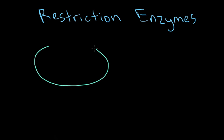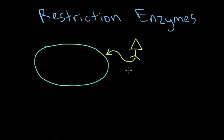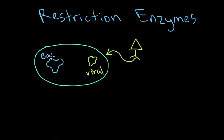Let's imagine that we've got a bacteria floating around doing its thing, and out of nowhere comes a virus that decides it wants to infect this bacteria. The virus attaches to the bacteria and injects viral DNA into it. The bacteria, being a living creature, also has its own DNA — the viral DNA and the bacterial DNA are both present inside.